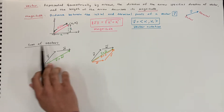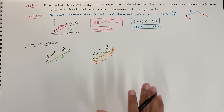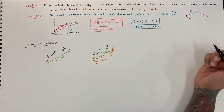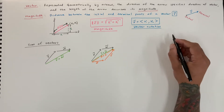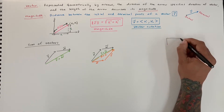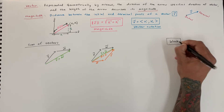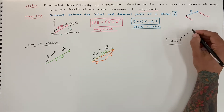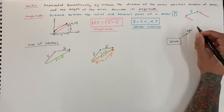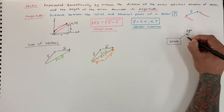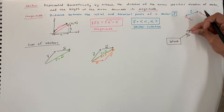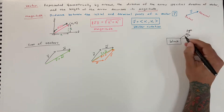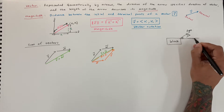Now we can talk about the sum of vectors and why any of this is important. Let's say you have a block here and you want to pull it from a rope, applying a force in that direction — pulling the block up at an angle. Here we have the angle on a horizontal plane, and you're pulling it at this angle.